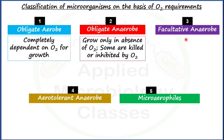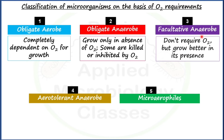Facultative anaerobs are those microorganisms which don't require oxygen but grow better in its presence. If oxygen is absent they can easily grow — no issue — but if oxygen is present, they grow in an even better way.